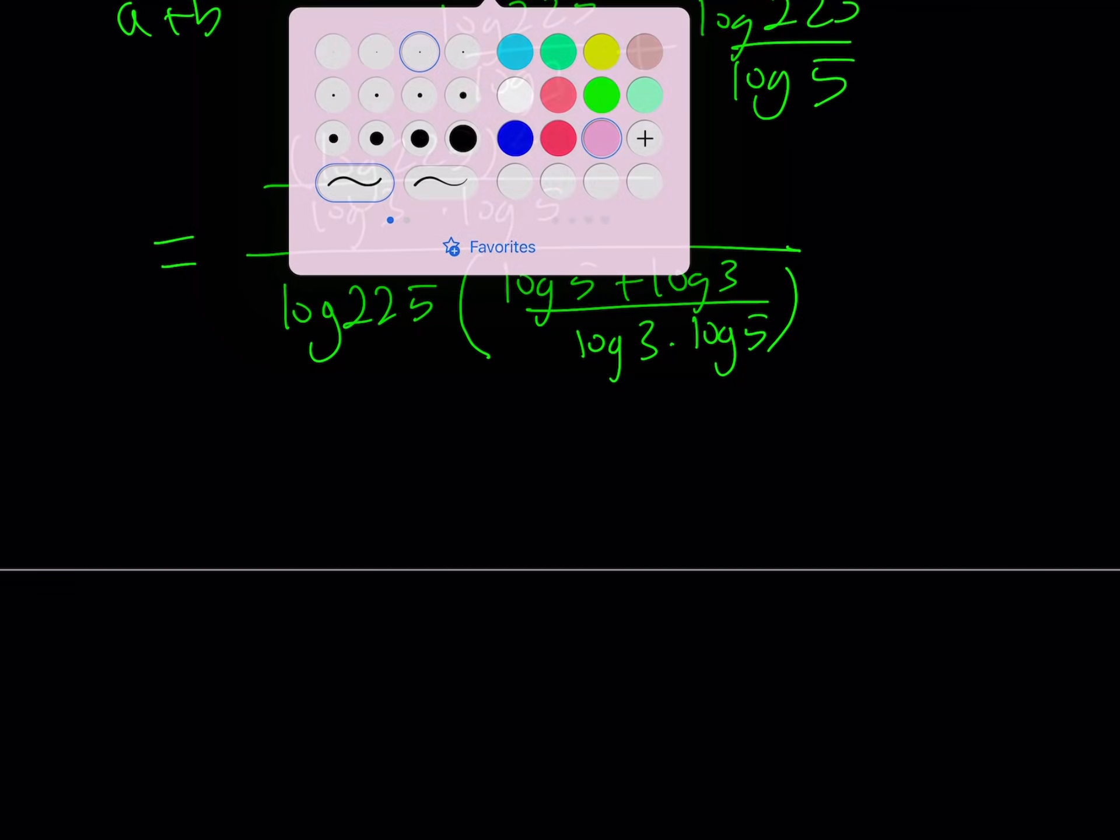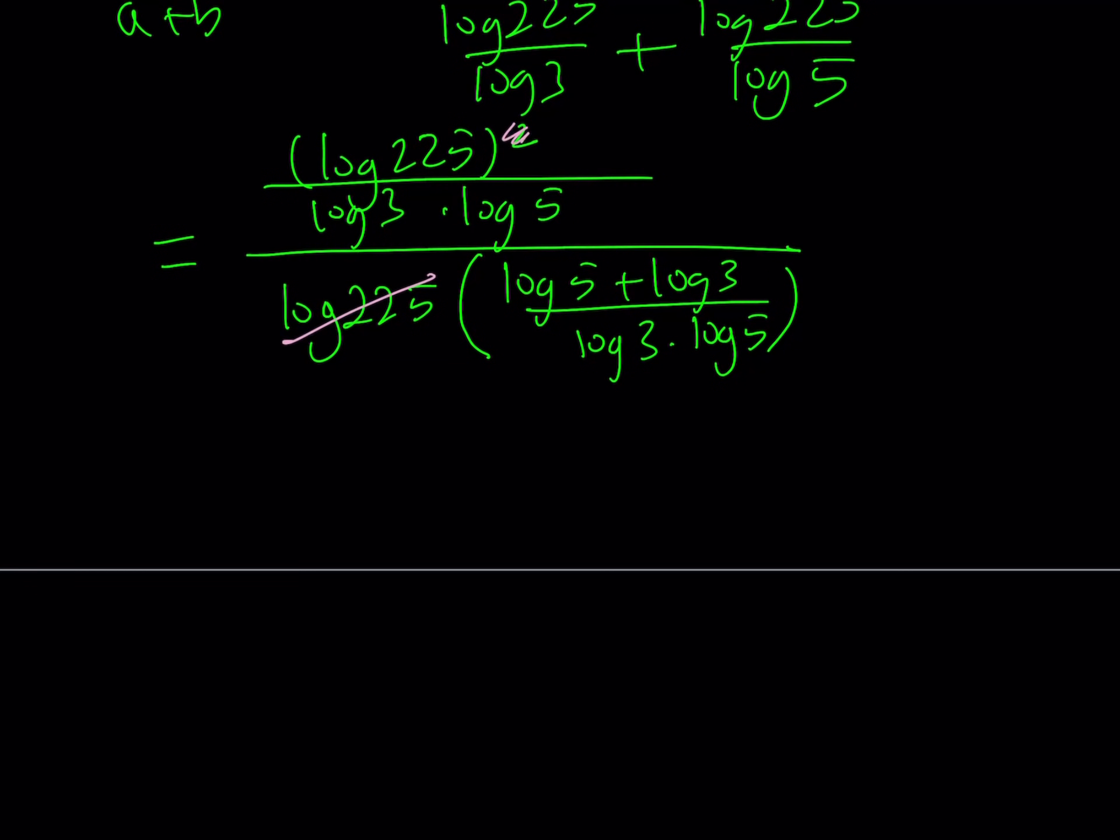We can simplify this. For example, one of the log 225s we can cancel out. Log 3 times log 5 as a product can be canceled out. And we end up with something nicer. We get log 225 over log 5 plus log 3.